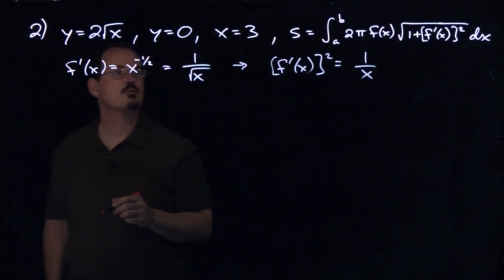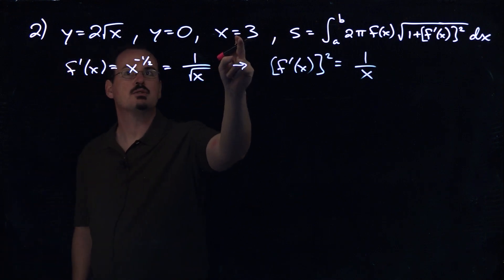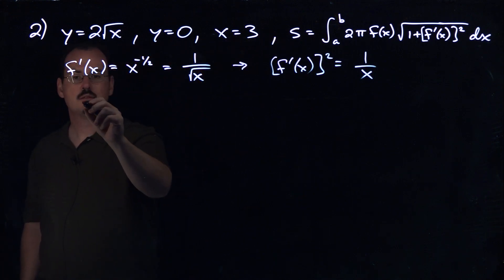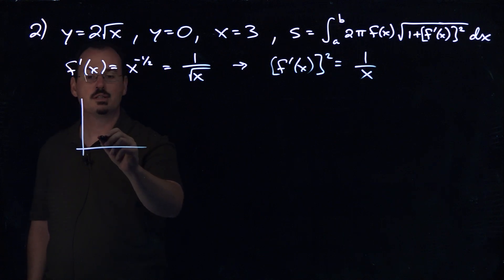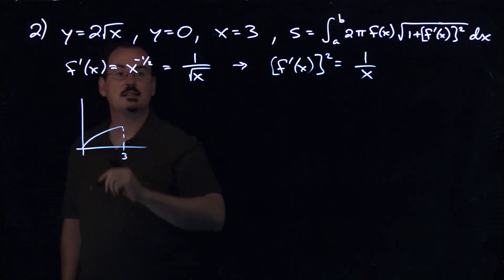So putting this into the formula, since we're bounding at x equals 3 here, just so we can see kind of a picture of what's going on here, this is a square root function. If this is x equals 3, like right here, then this is the region that we're talking about, revolving that around the x-axis.